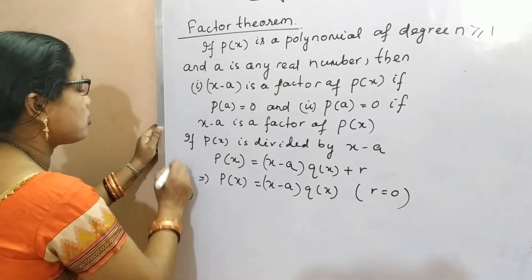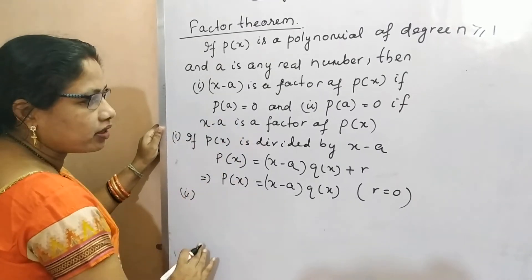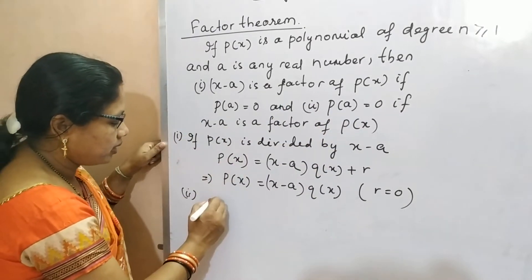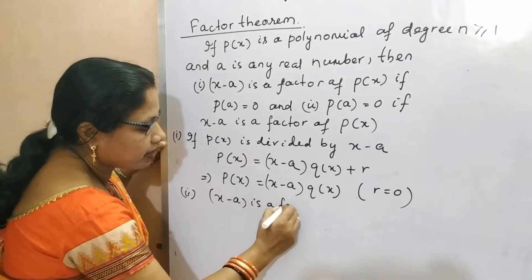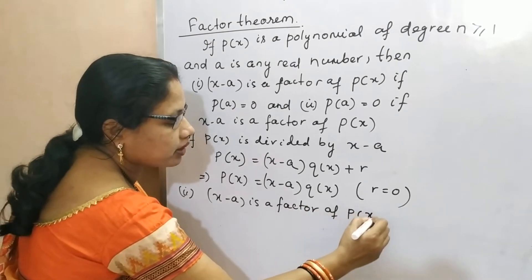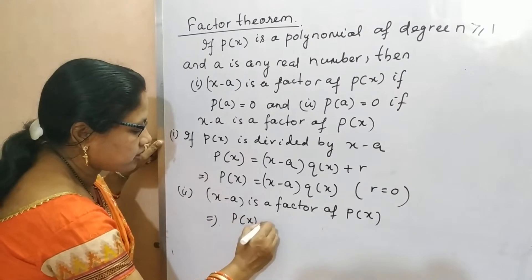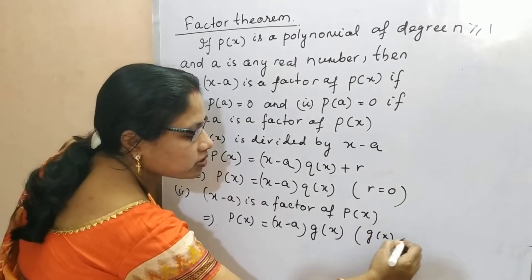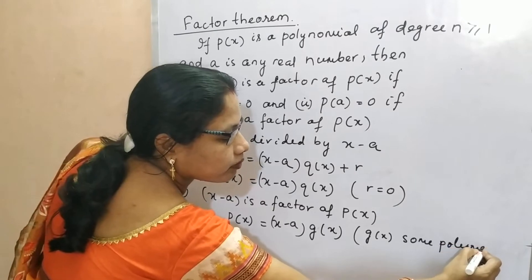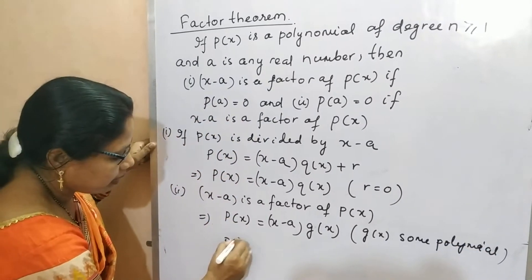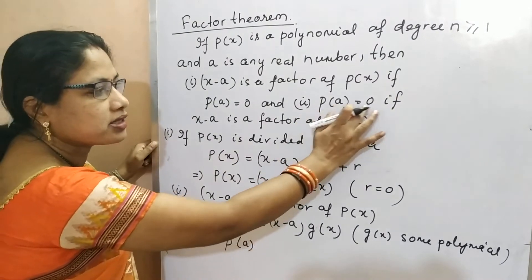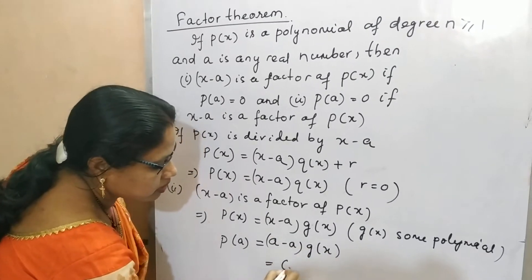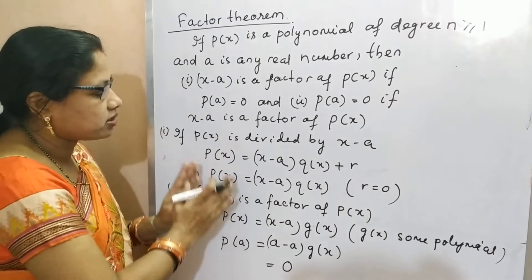This is the proof of the first statement. For the second statement, it is given that X minus A is a factor of P of X. This implies P of X is equal to X minus A multiplied with G of X, where G of X is a polynomial. We have to prove P of A is equal to 0. So P of A is equal to A minus A multiplied with G of A, and this becomes 0. So both statements are proved on the basis of the remainder theorem.